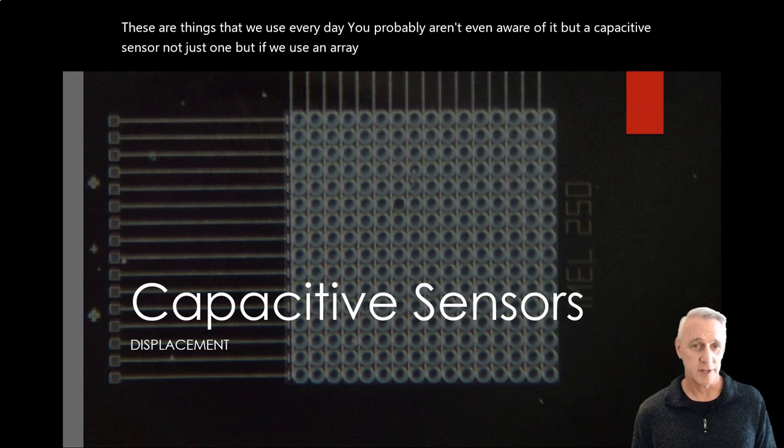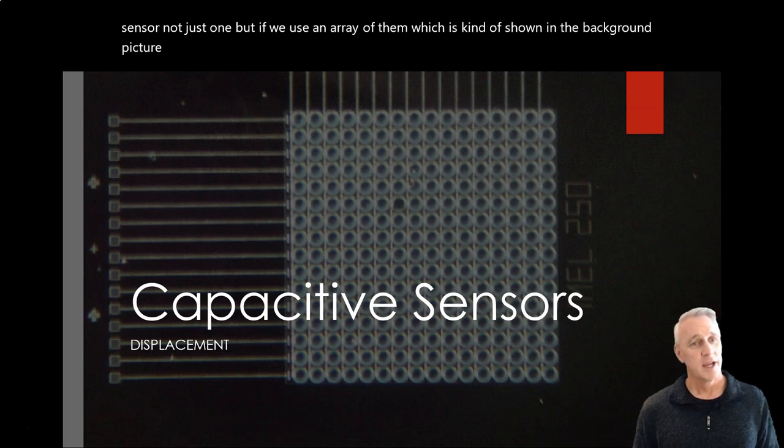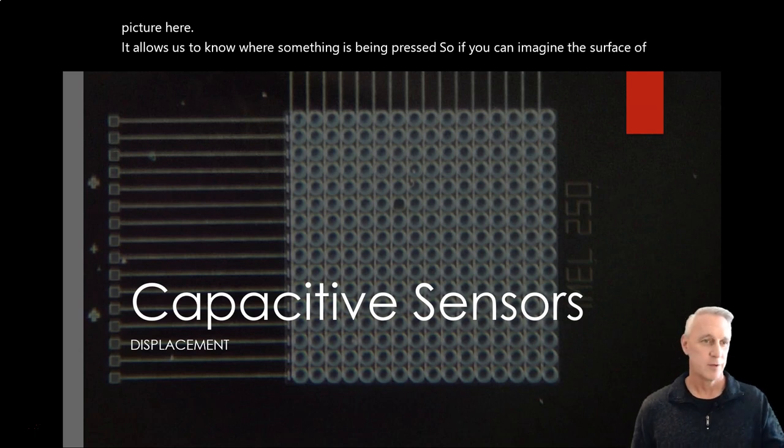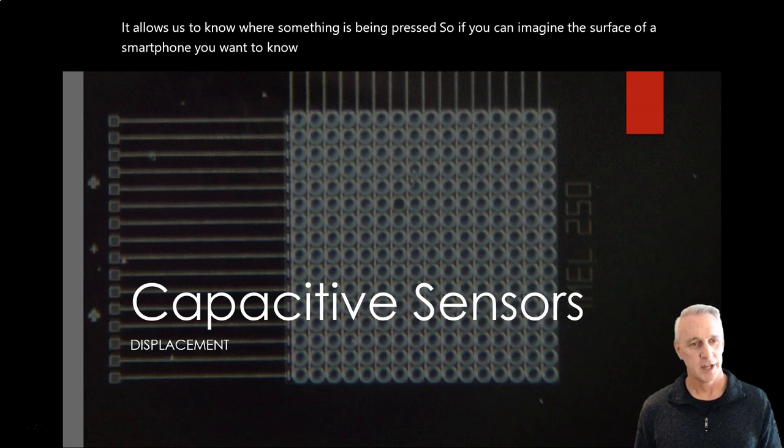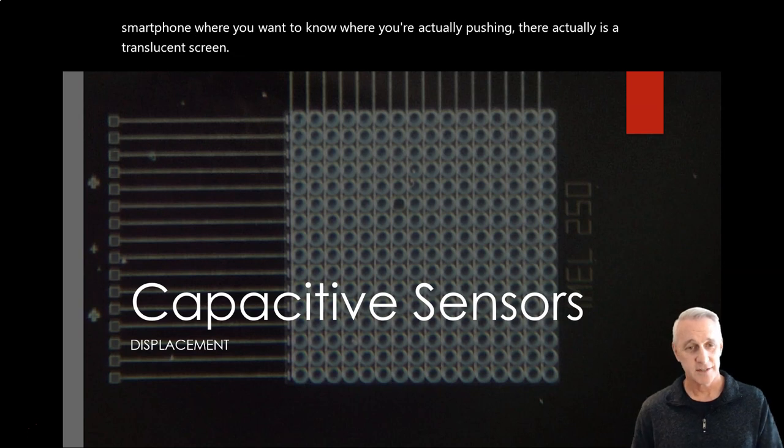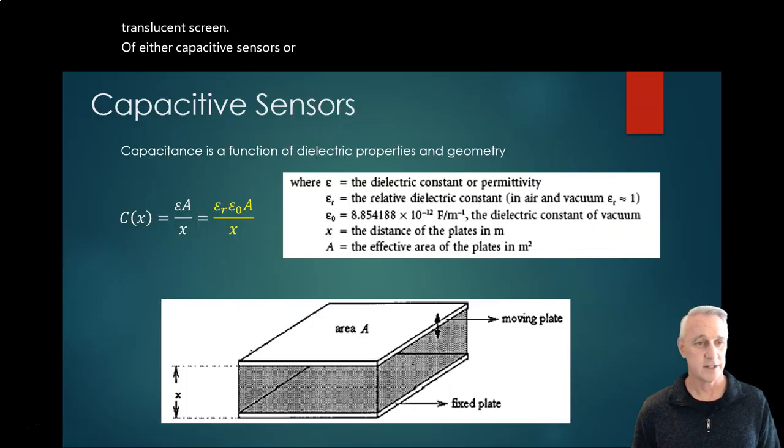...but if we use an array of them, which is shown in the background picture here, it allows us to know where something is being pressed. If you imagine the surface of a smartphone, you want to know where you're actually pushing. There actually is a translucent screen of either capacitive sensors, or there's actually another type of technology to do the same thing.